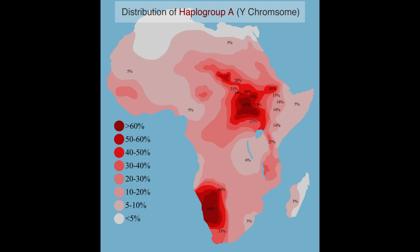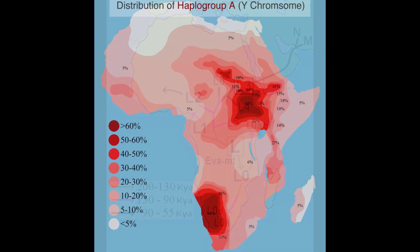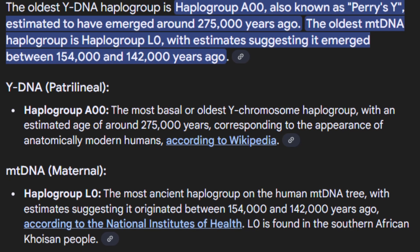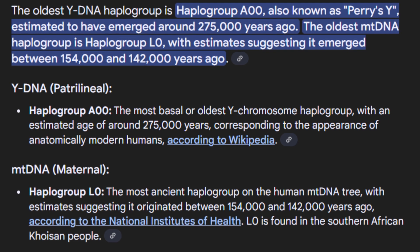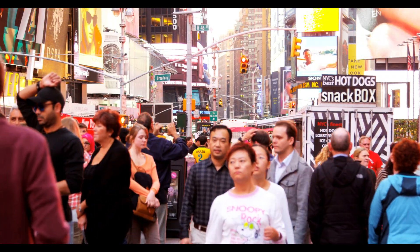Y-DNA haplogroup A00 originated with one male human around 275,000 years ago — he is the ancestor of all humans. The oldest matrilineal haplogroup, mitochondrial DNA haplogroup L0, is estimated to be around 150,000 years ago. So through the paternal side, A00 is the oldest haplogroup, and through the maternal side, L0 is the oldest. All humans are descended from these two people, one who lived 275,000 years ago and the other 150,000 years ago — meaning the one common male and female ancestor of all modern humans lived at different times, though both are still our ancestors.